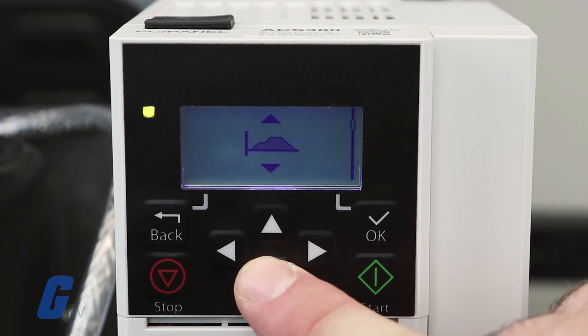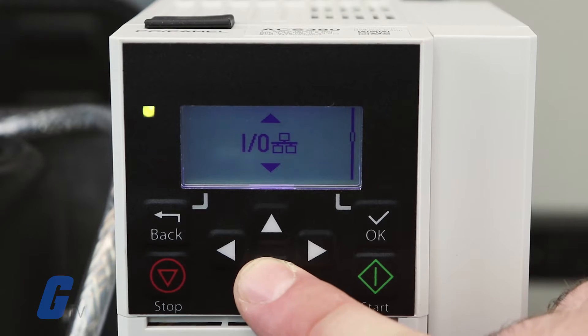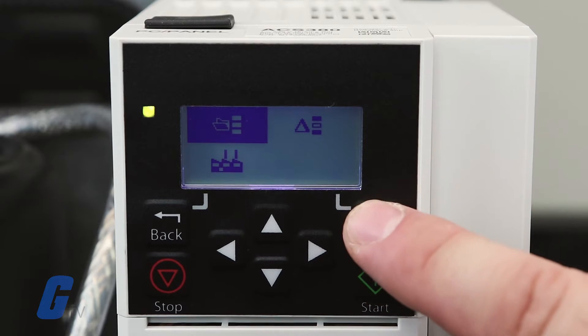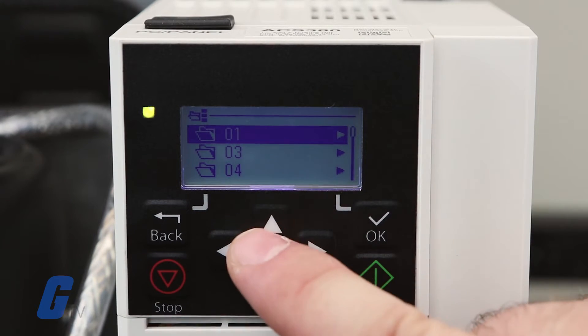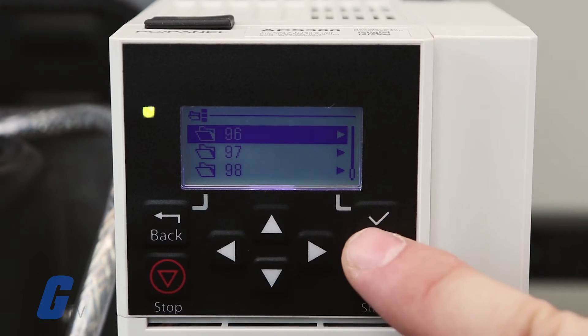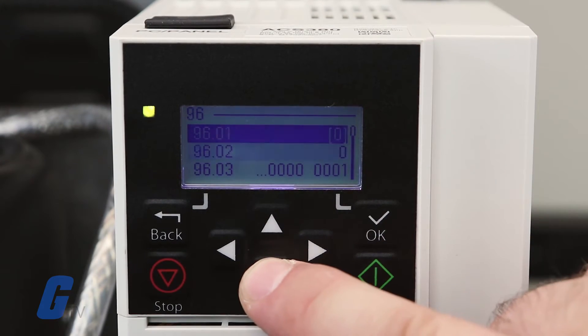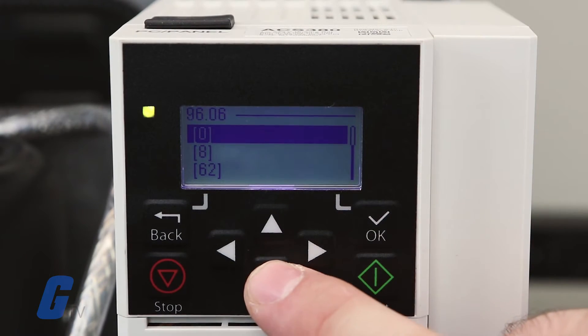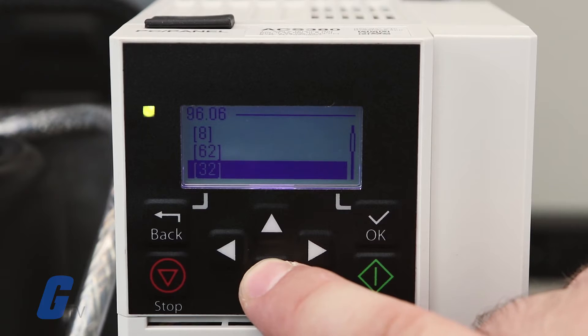Select parameter group 96, then scroll to parameter 96.06 and select the all to factory default option.